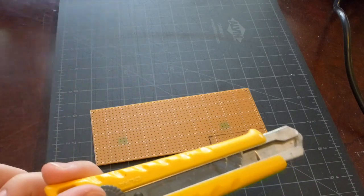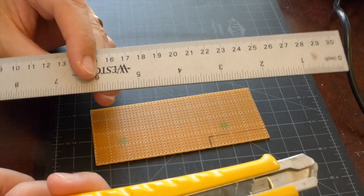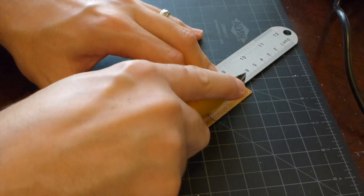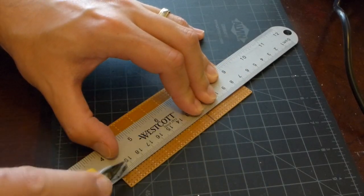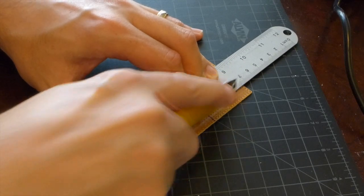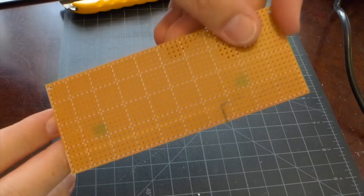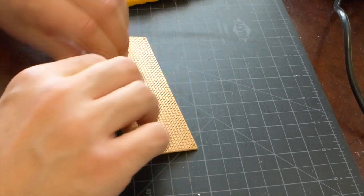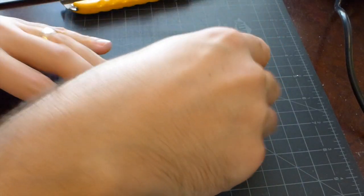To cut the board, we're going to use a utility knife and a metal ruler. You can see the score line there, which is where we will snap the board. Sometimes it can be a little tough to get it to snap. You can do additional scoring if necessary to help.